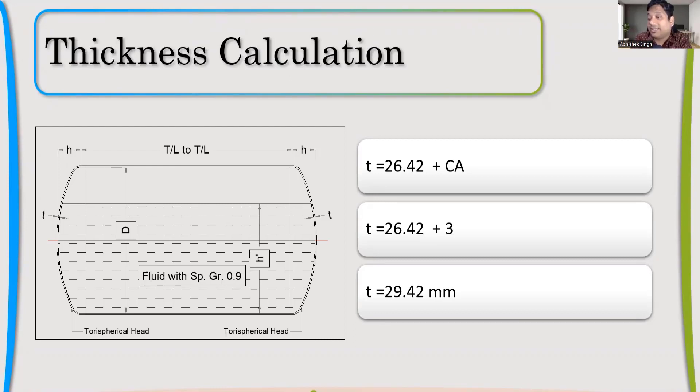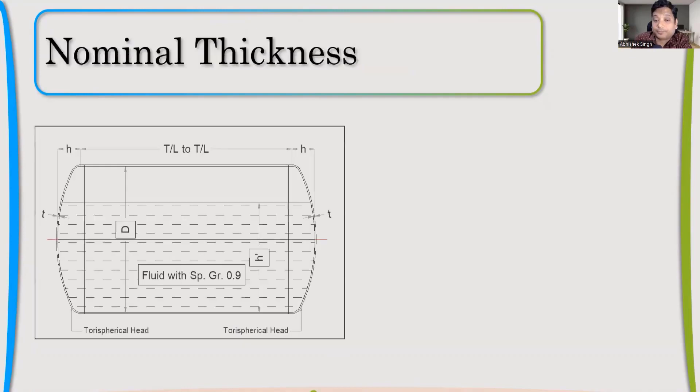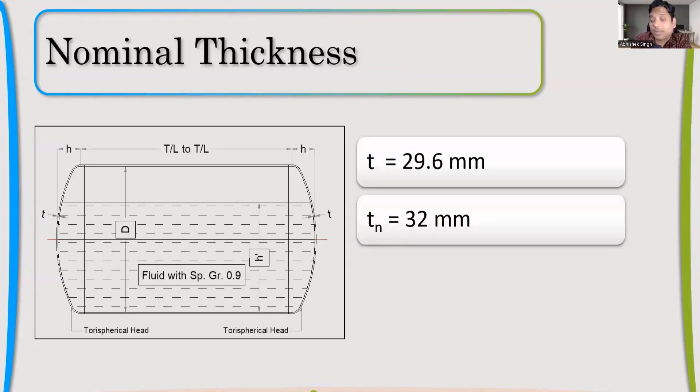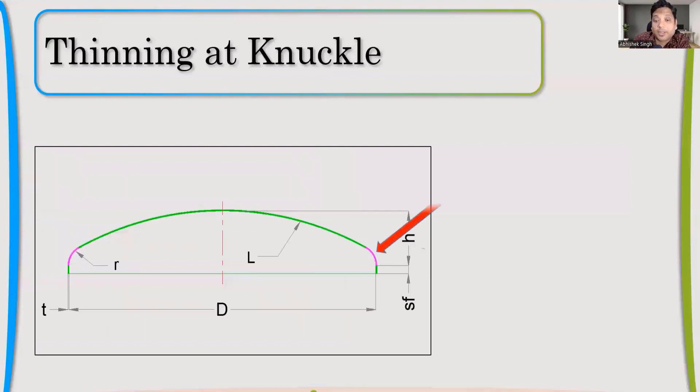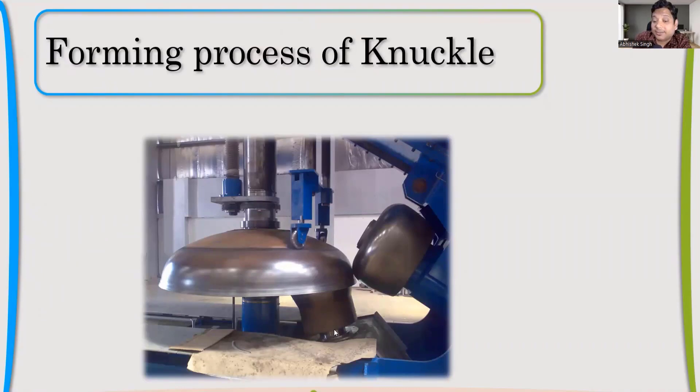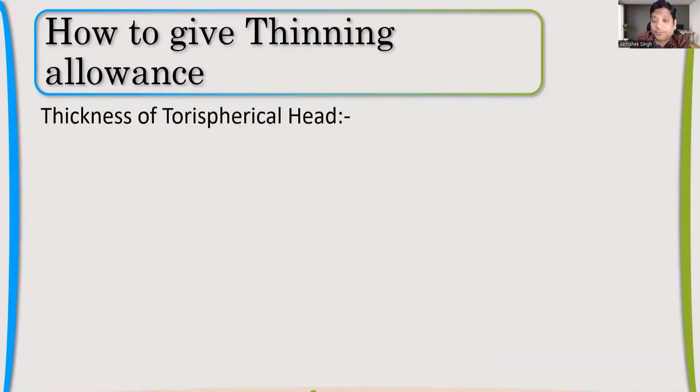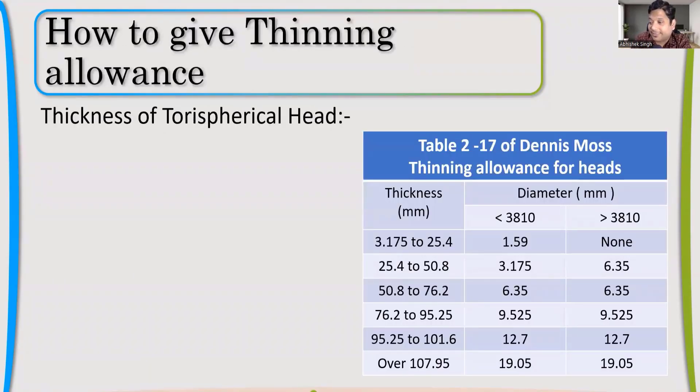We always struggle with how much thinning will happen. Now to sort that problem, let us start with 32. I have taken 32. Now we'll see whether this selection is right or wrong. Why can that be wrong? Because there can be thinning. If thinning is more, then it can go lower than the minimum design thickness. How to make sure that thinning at the knuckle, because knuckle is the highest radius portion where maximum fiber elongation will happen and there you will get the minimum thickness.